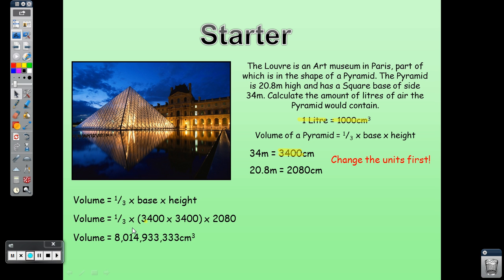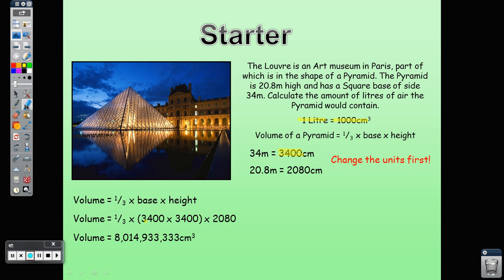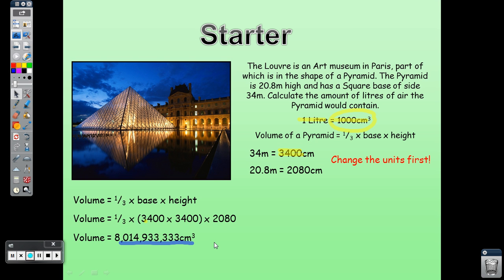Since 1000 cm³ = 1 liter, we take the large value and divide it by 1000 to get the answer in liters.